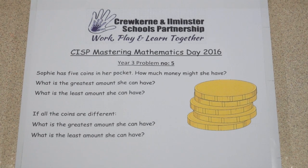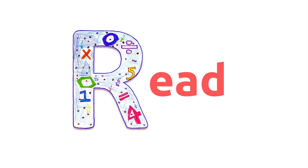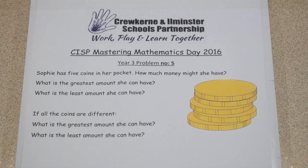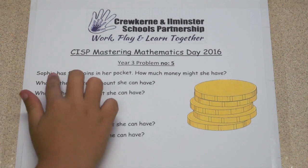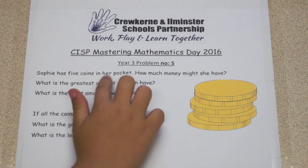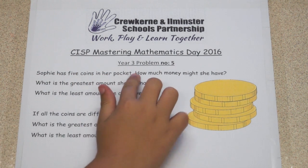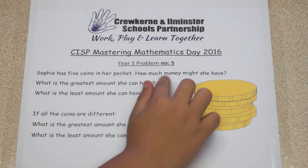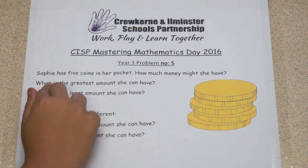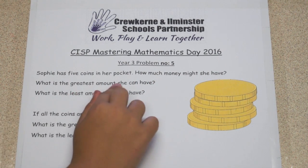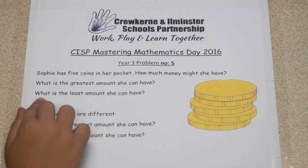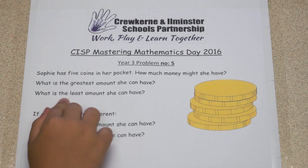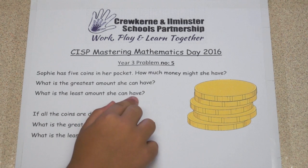Here is the question we have to solve using RUCKSACK. R is for read the question — first we have to read it. Sophie has five coins in her pocket. How much money might she have? What is the greatest amount she can have? What is the least amount she can have?